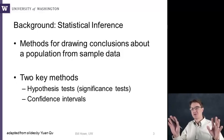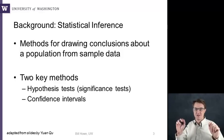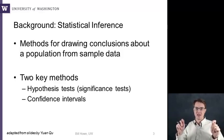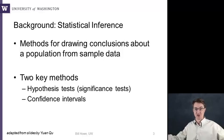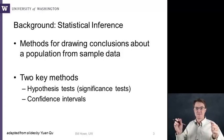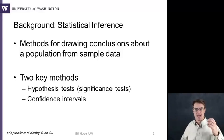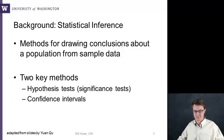So to get started, let's talk about the background. This is not going to be a replacement for an introductory college statistics course — it's a quick overview of terminology and concepts you should be familiar with. We're talking about statistical inference: methods for drawing conclusions about a general population from sample data. The two key methods are hypothesis tests and confidence intervals. We'll come back to confidence intervals later but won't address them directly right now.